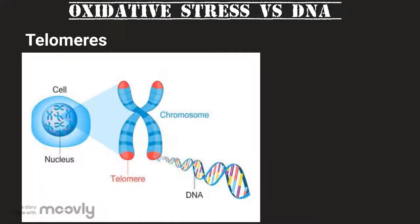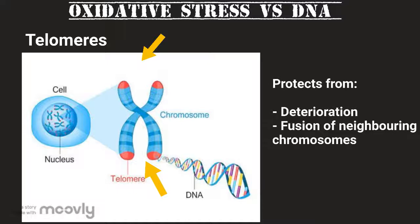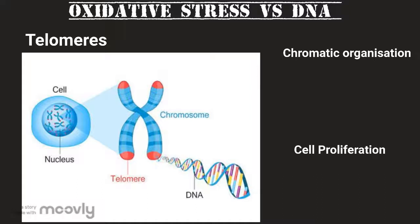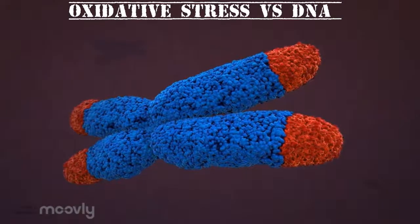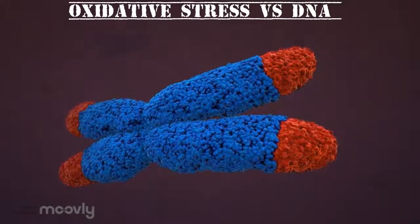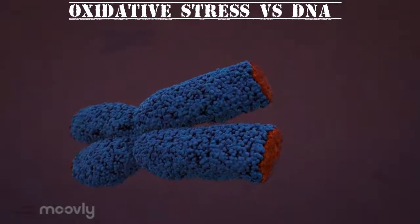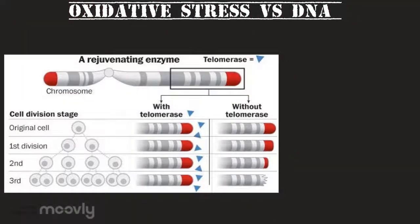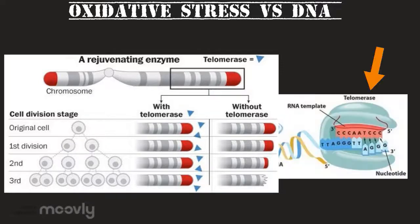A telomere is a region of repetitive nucleotide sequences at each end of a chromosome, which protects the chromosome from deterioration or fusion with neighboring chromosomes. They have important roles in cellular processes such as chromatin organization and control of cell proliferation. Telomeres are highly susceptible to oxidative stress, which consequently results in telomere shortening. Telomeres are shortened with each round of DNA replication because they lack the enzyme telomerase.